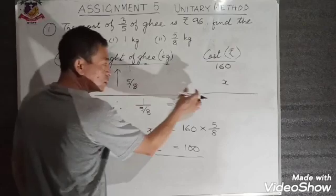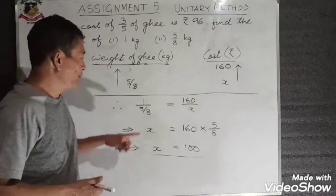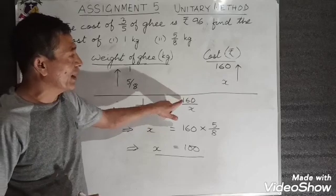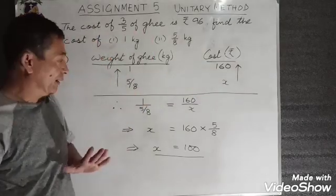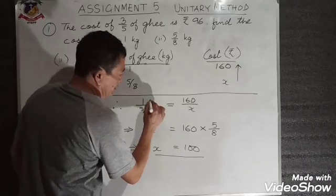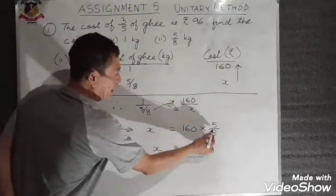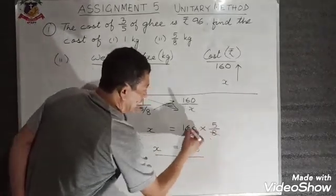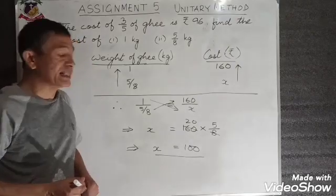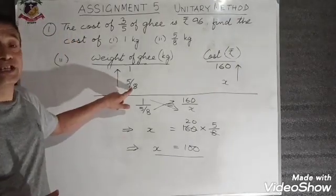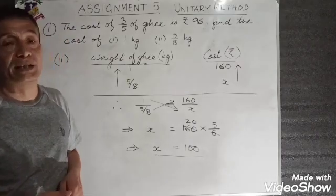Since less weight gives less cost, the arrowhead for cost also points accordingly. Using cross multiplication: 1 multiplied by x equals 160 multiplied by 5/8. So 8 goes 20 times into 160, meaning x equals 20 multiplied by 5, that is 100. Therefore the cost of 5/8 kg of ghee is rupees 100.